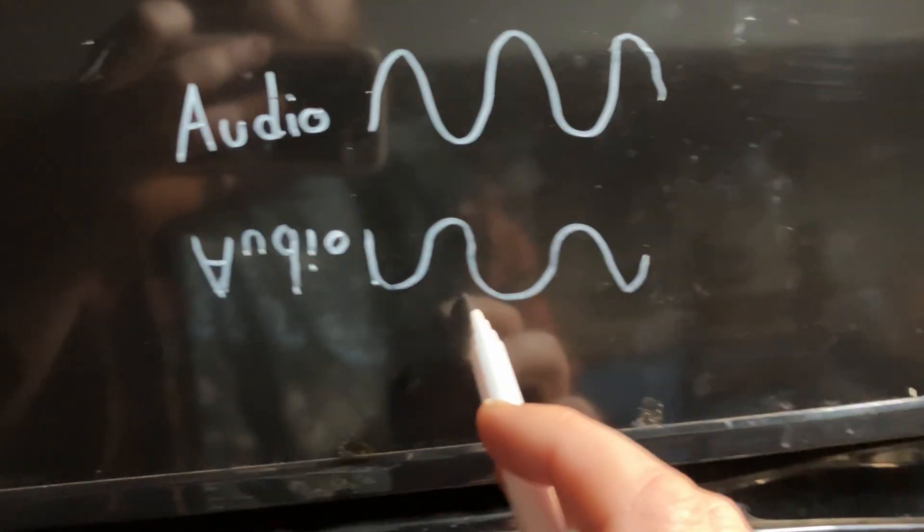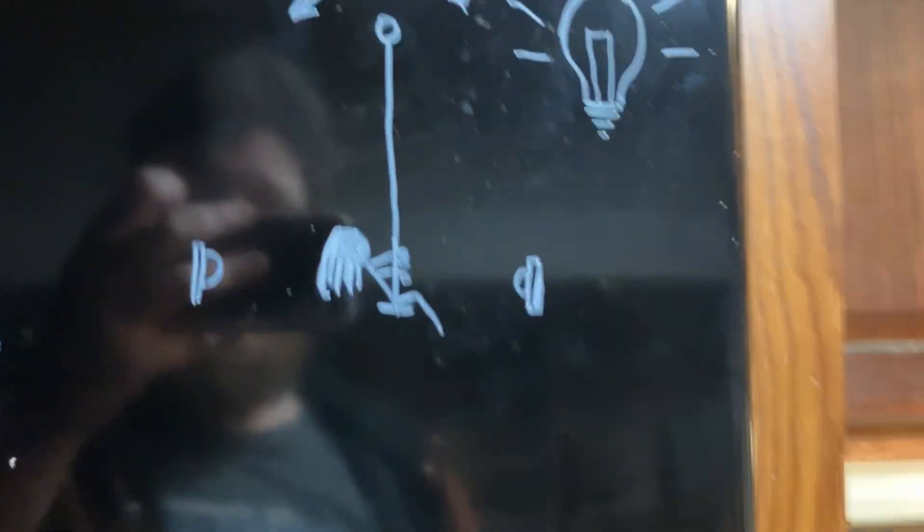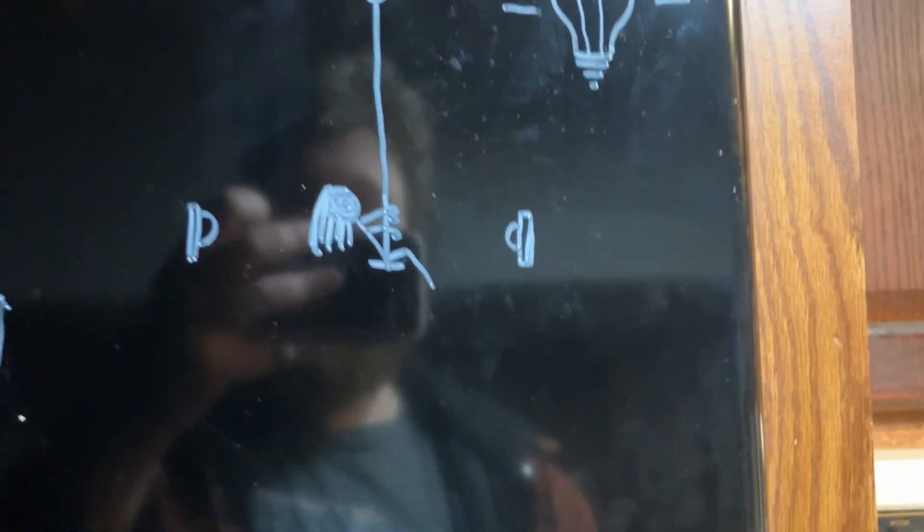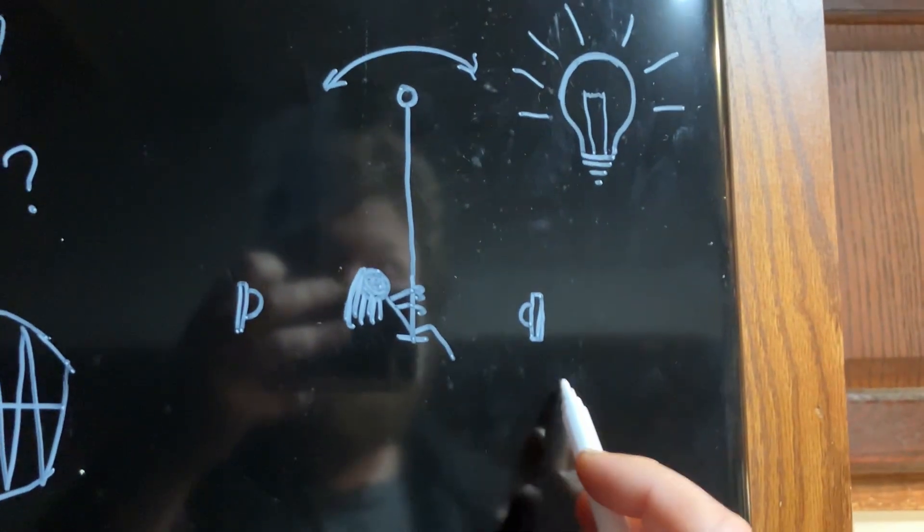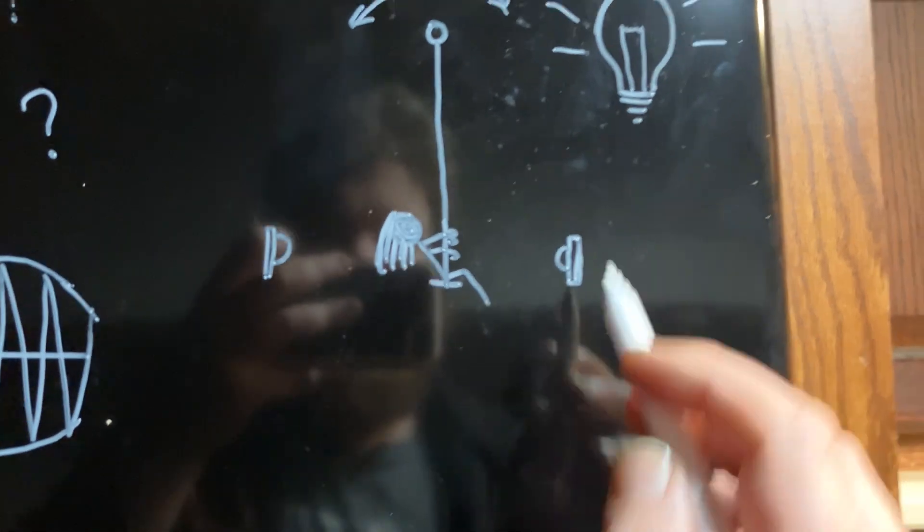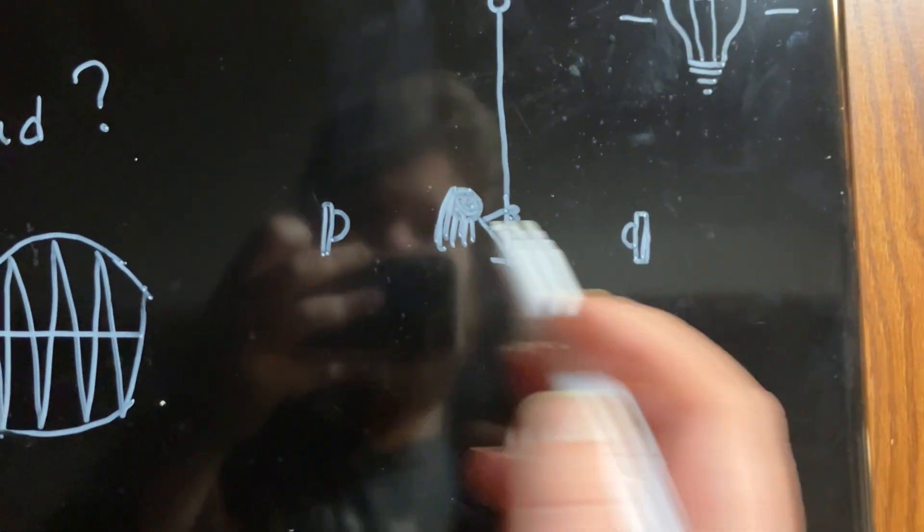If you want to visualize that better, we'll name this little character Darby. Darby wants to turn this light bulb on. There's two switches—one here and one here. If she swings, she's going to hit this switch, swing back and hit that switch. Well, that's kind of redundant. We don't really need that switch; we just need one switch.